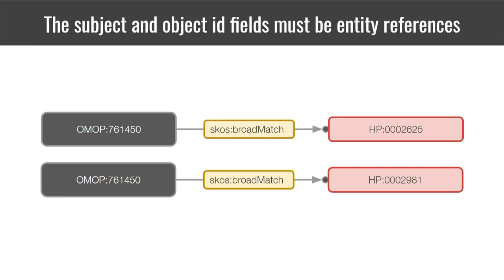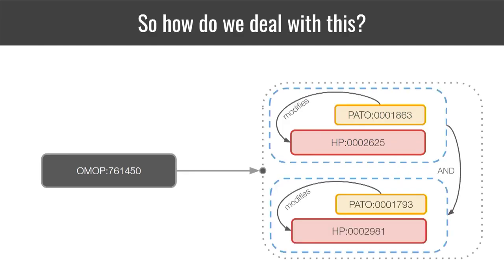One of the key requirements of the current SSSOM profile is that both the subject and object ID should be modeled as entity references — essentially identifiers. The question is, if that is a requirement, how can we represent something like this as an identifier?